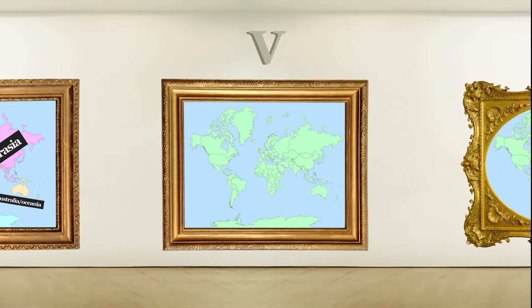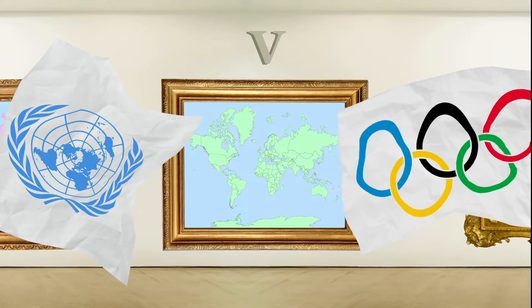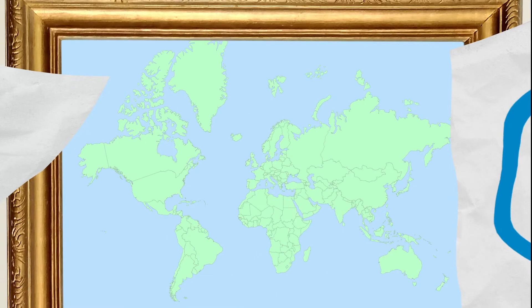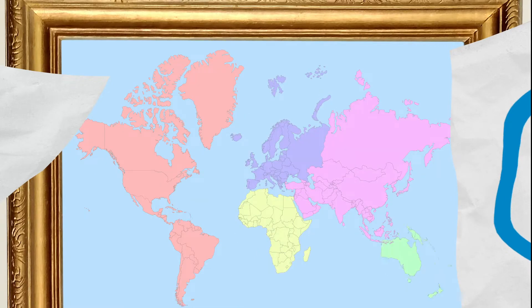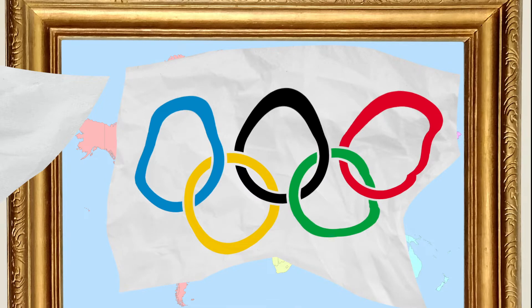The 5-continent model is the one used by the UN and the Olympics. It takes into account only the inhabited continents, which for this model are America as just one, Europe, Africa, Asia and Oceania. The Olympic logo represents this with its five rings.